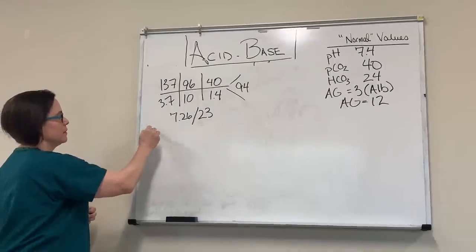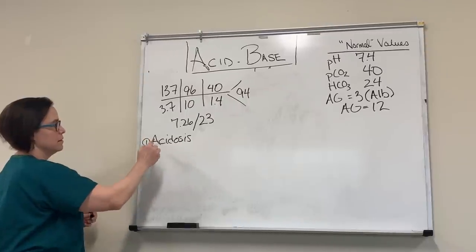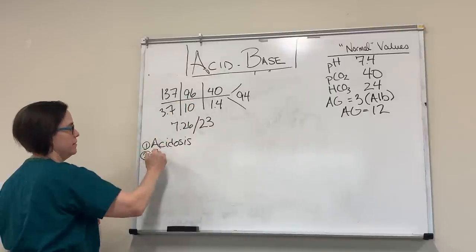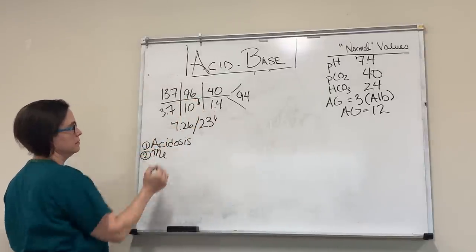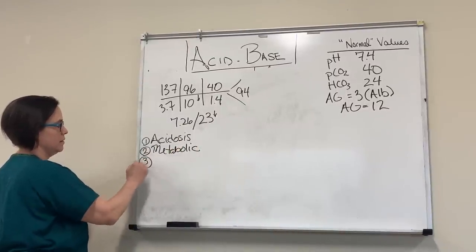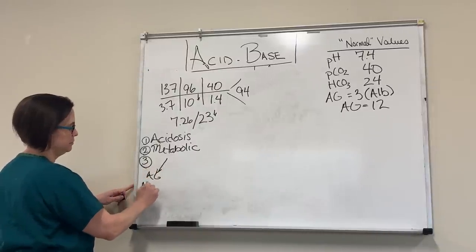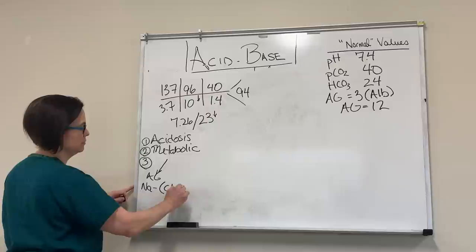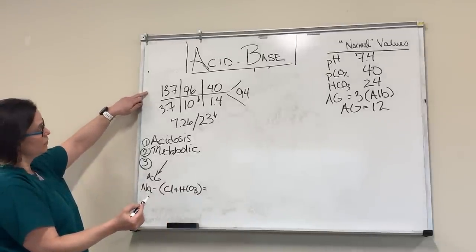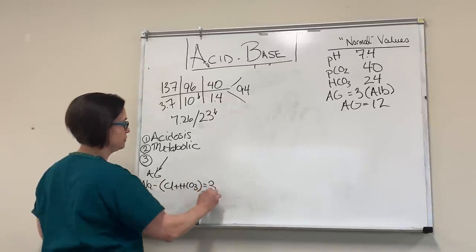Step one: it's an acidosis. Step two: metabolic versus respiratory. There's acidosis and the bicarb is also down, so metabolic acidosis. Anion gap: sodium minus chloride minus bicarb equals 137 minus 96 minus 10 equals 31.